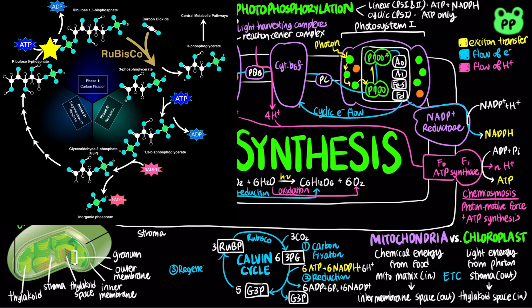Phase three regenerates ribulose bisphosphate, abbreviated as RuBP, starting a new round of the Calvin cycle. The regeneration phase requires the hydrolysis of three ATPs.